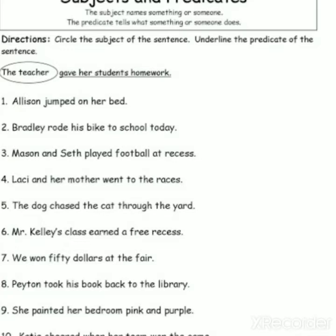Now let us try to find the subject and predicate from sentences — a short test. First sentence: 'Alison jumped on her bed.' Alison is the subject and the remaining part is the predicate. Second sentence: 'Bradley rode his bike to school today.' Bradley is the subject — it is a noun, the name of a person. Third sentence: 'Mason and Sate played football at recess.' The subject here is Mason and Sate.